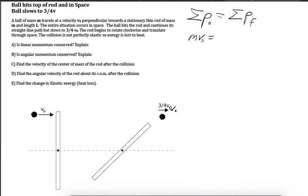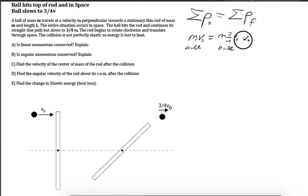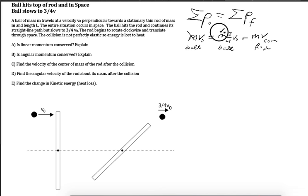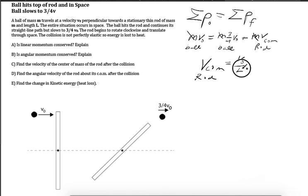After the collision, the ball has mass m and velocity three-quarters v₀, plus the linear momentum of the rod, which is m times v_com. We have m in every term so we can cancel it. Subtracting three-quarters v₀ from both sides and solving for v_com gives us the velocity of the center of mass of the rod equal to one-quarter v₀.